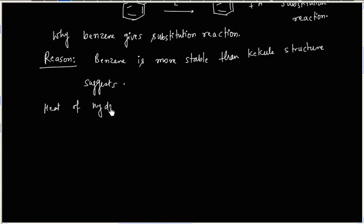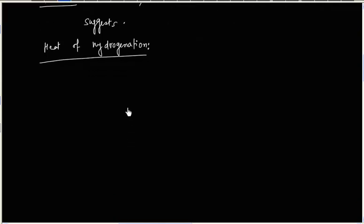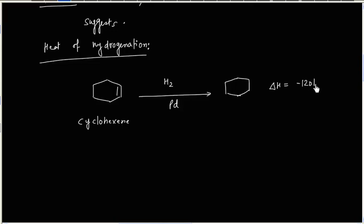Heat of hydrogenation data can be used to compare the stability of benzene. Let us consider cyclohexene. Upon hydrogenation, it gives cyclohexane. In this process, 120 kJ per mole energy is released.